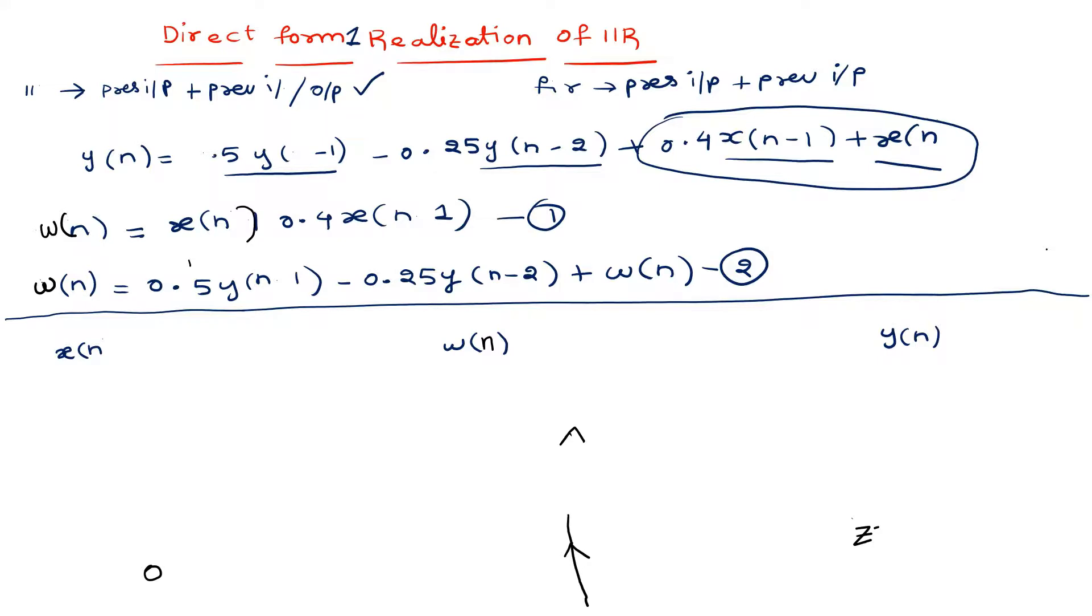What is ω(n)? ω(n) has x(n) in it. Let me directly pull this x(n) here, and it is adding some other block. So let's put an adder here. It is adding 0.4 times x(n-1).